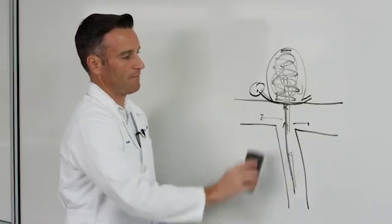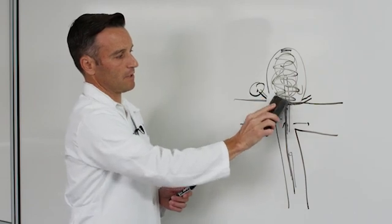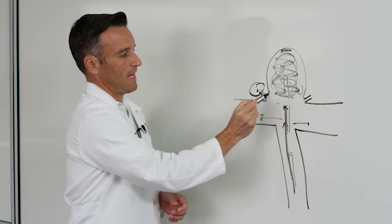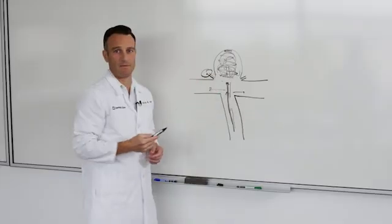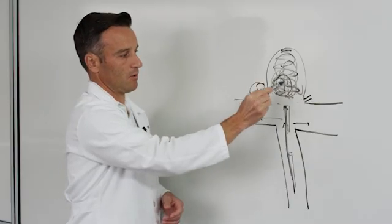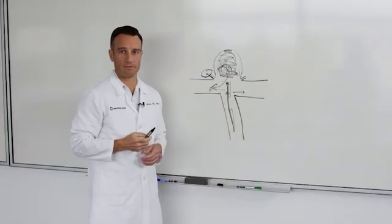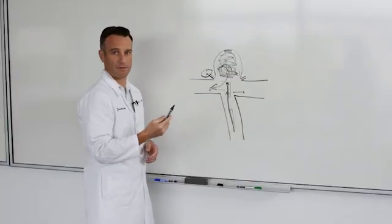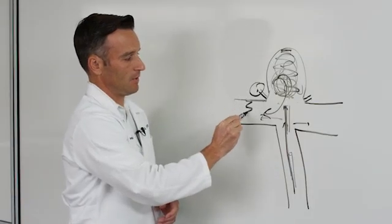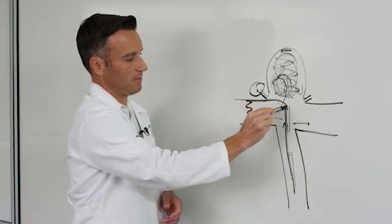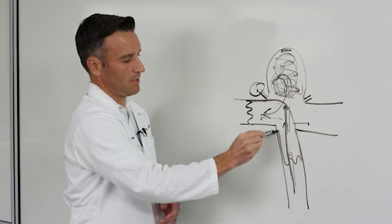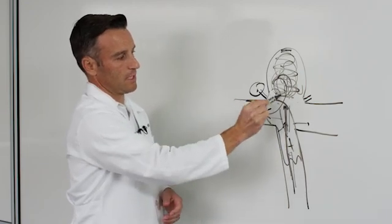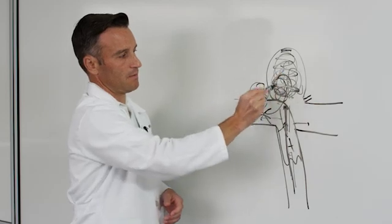You may ask well what if the opening of the aneurysm is very large? If that's the case it may be hard to keep the coils in the aneurysm and the coils could effectively fall out of the aneurysm and cause stroke. So one trick we have is we can actually place an aneurysm stent and we place the stent in the artery of the brain across the opening of the aneurysm and this creates a shoulder to help keep the coils into the aneurysm.